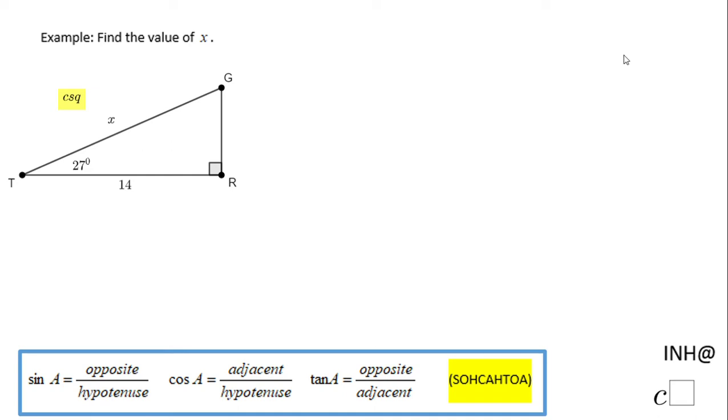Welcome or welcome back to INH@C squared. In this example we need to find the value of x. X is the length of segment TG which is the hypotenuse on the other side of the 90 degrees.